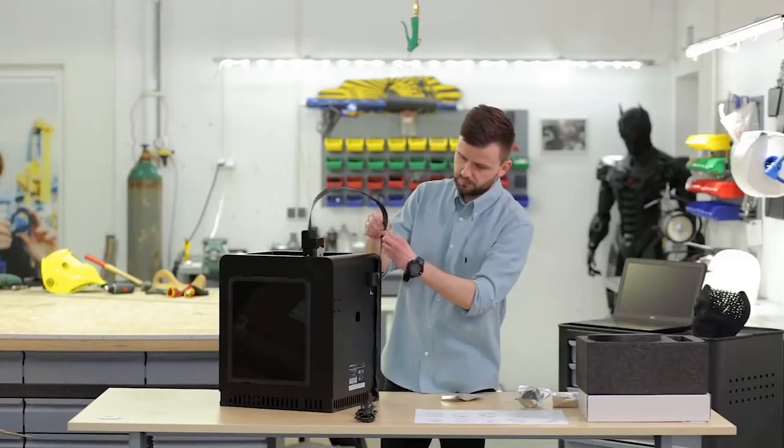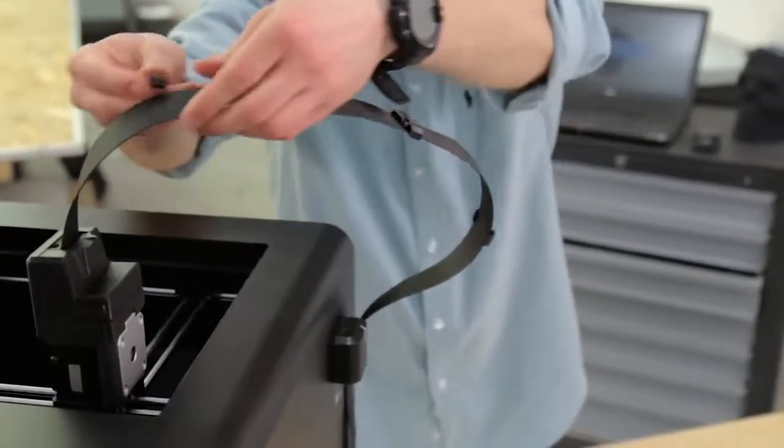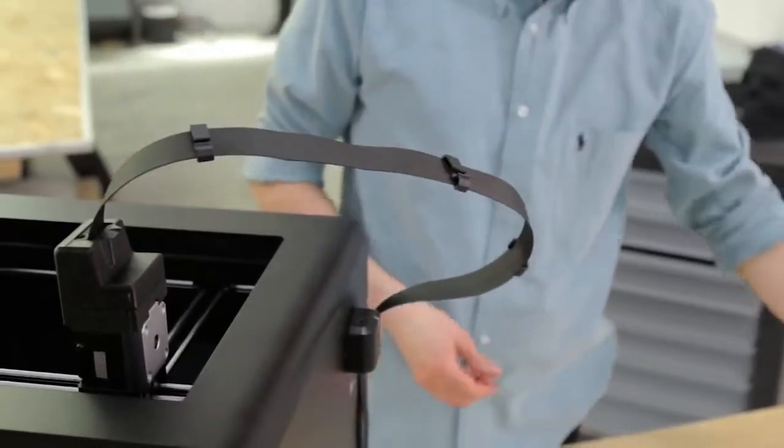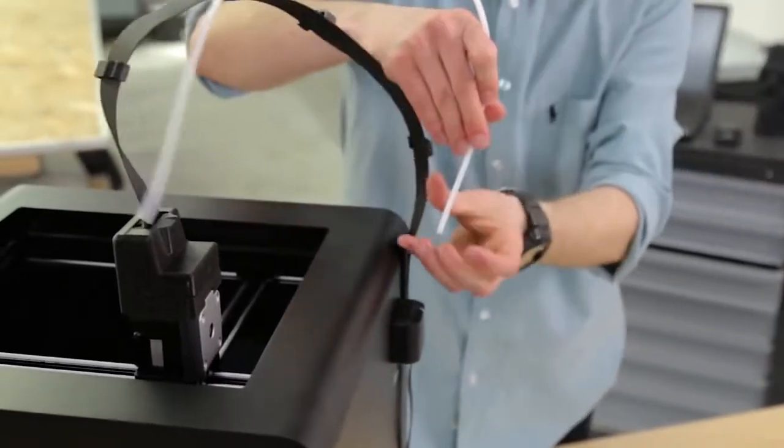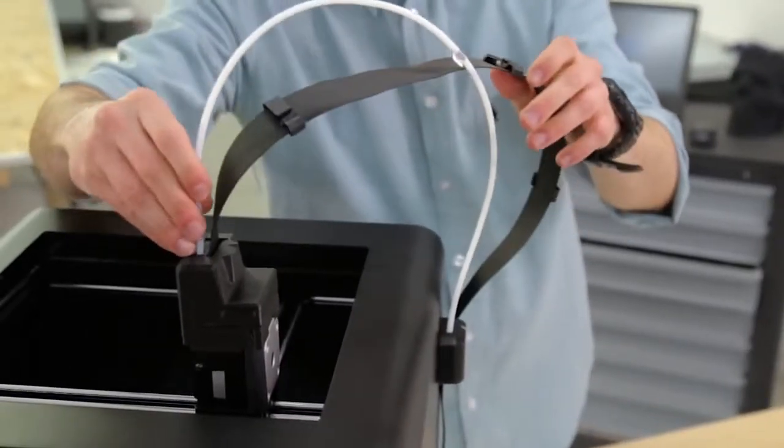To properly set up the material, you will need to attach the material guide clamps to the extruder cable. Put the material guide through the clamps and fix it into the material end stop and the extruder.